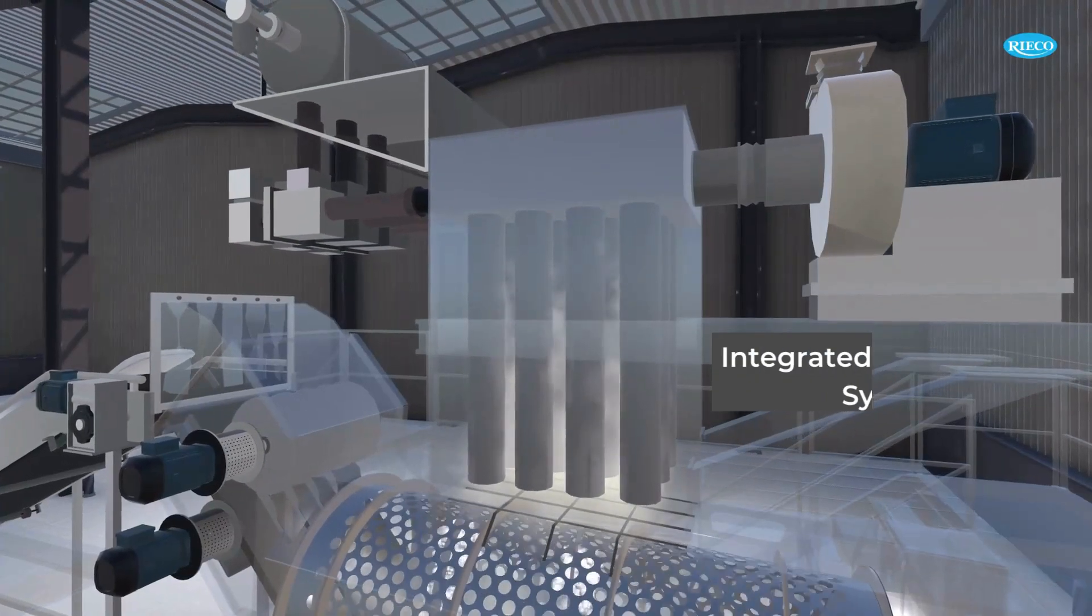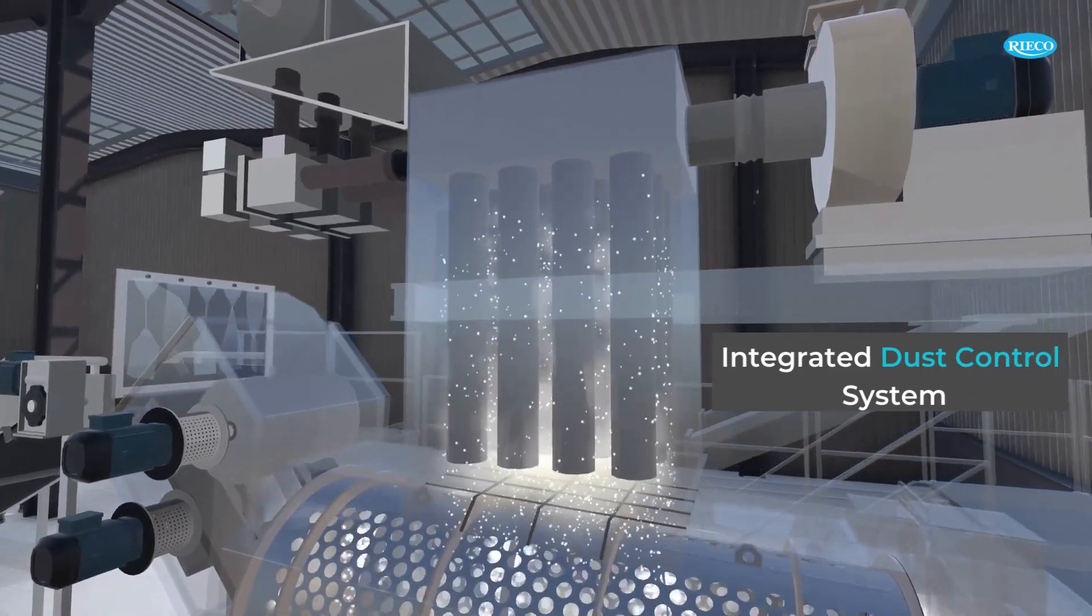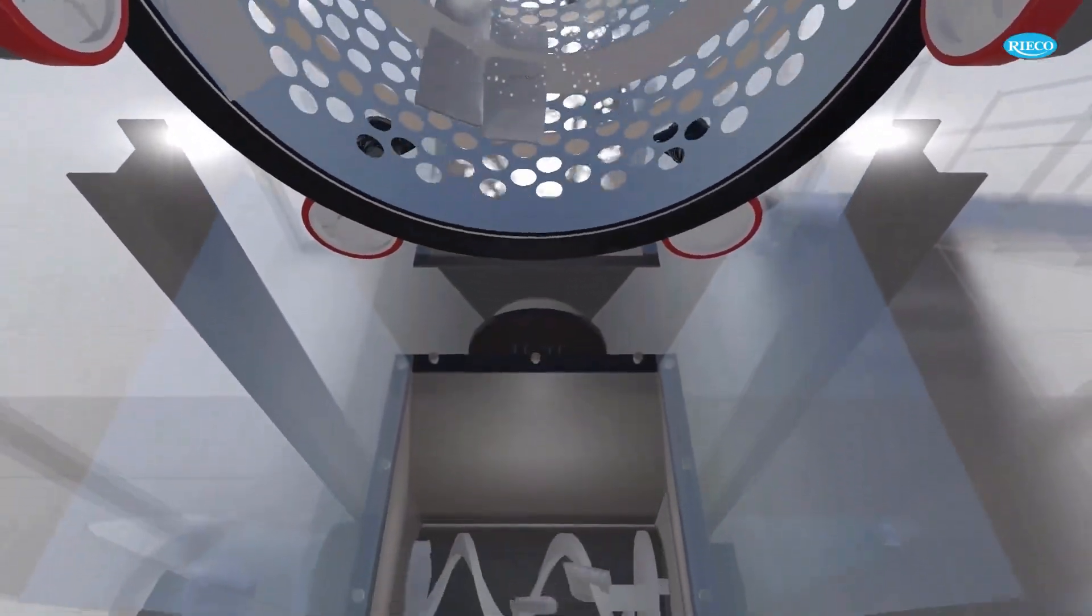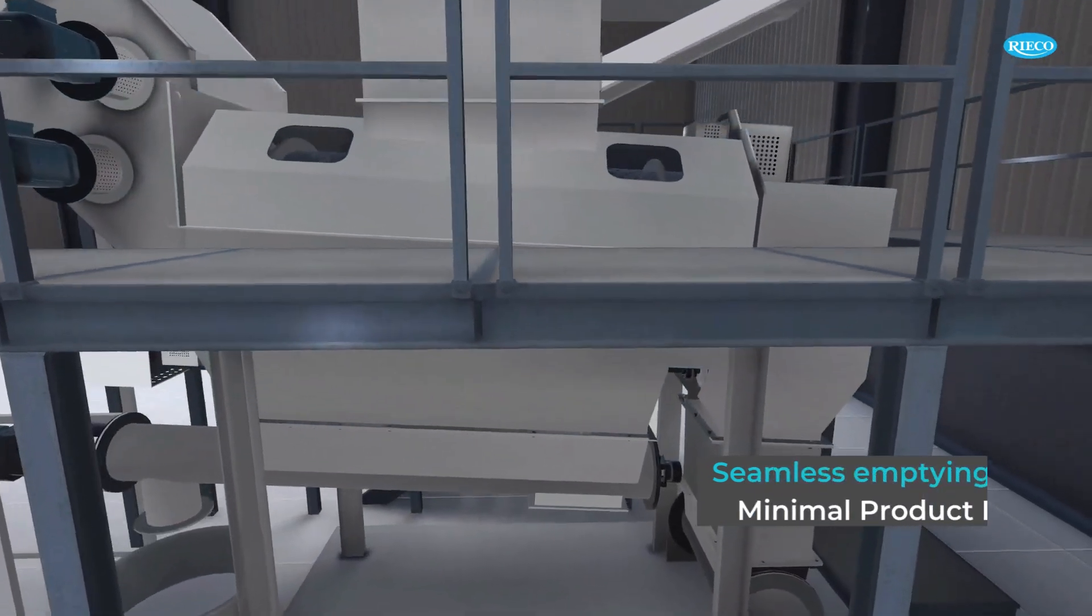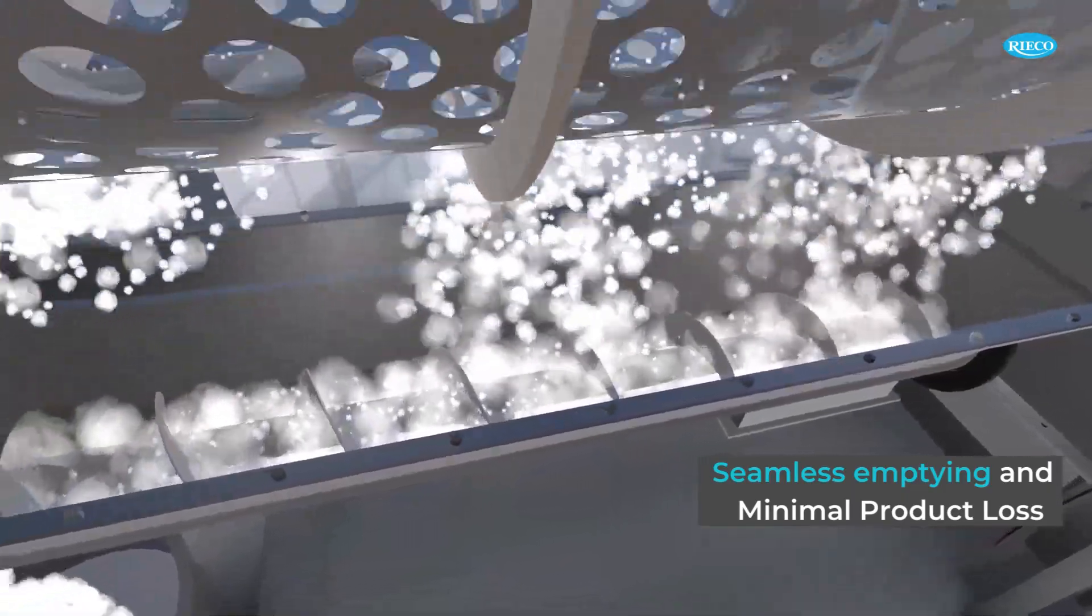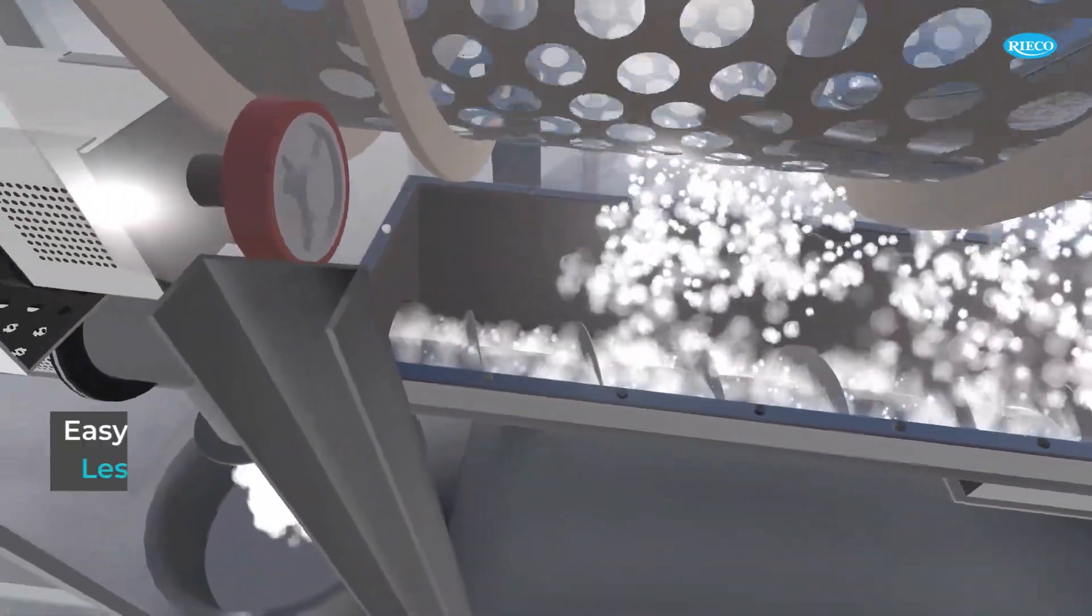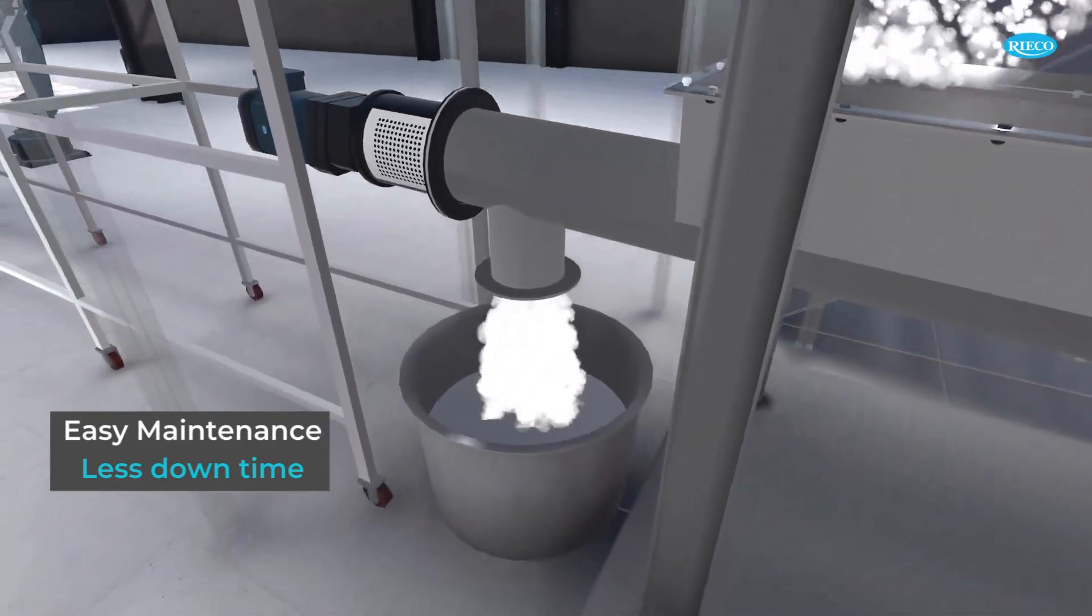We ensure a clean working environment by filtering dust particles. Our bag emptying machine features a robust and compact design, ensuring a smooth and effortless emptying process with minimal product loss, reducing downtime and keeping your operations running smoothly.